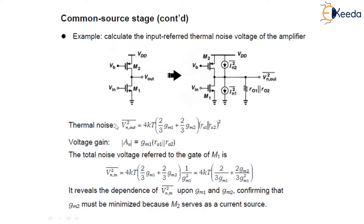The thermal noise is simply given by 4KT times (2/3) gamma times (GM1 plus GM2 times 2/3), times R0.1 in parallel with R0.2, whole squared. The voltage gain in this case is given by GM1 times (R0.1 in parallel with R0.2).